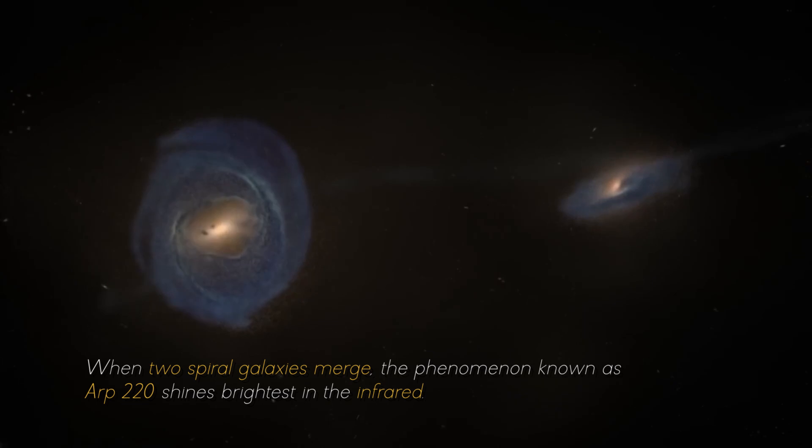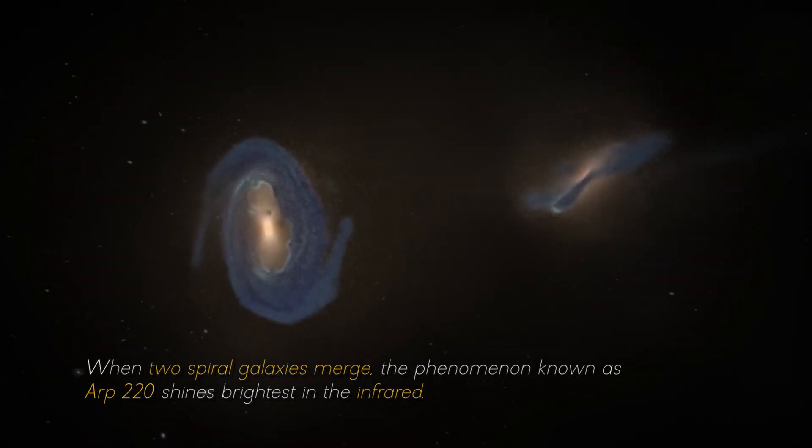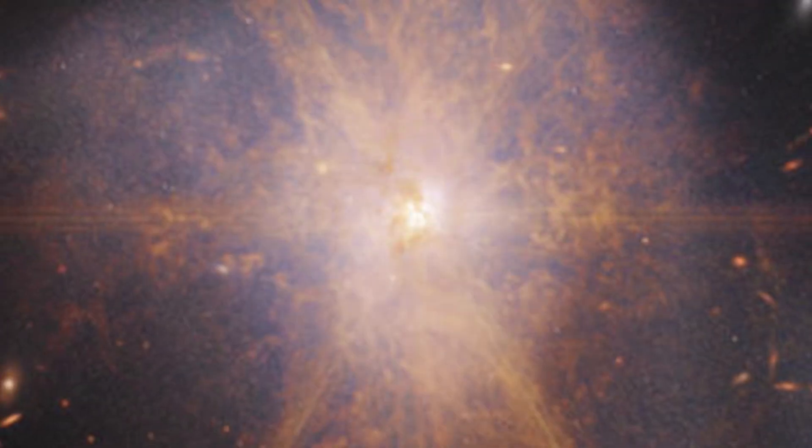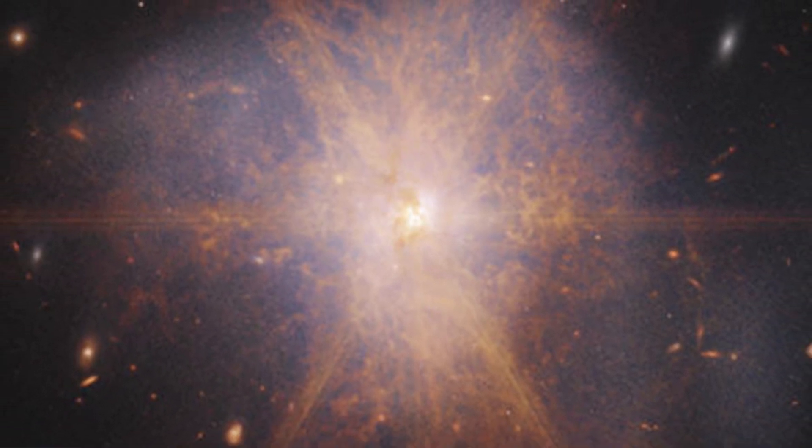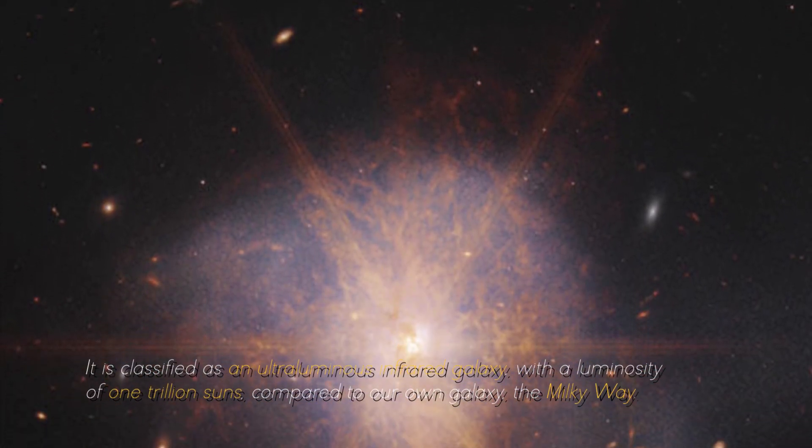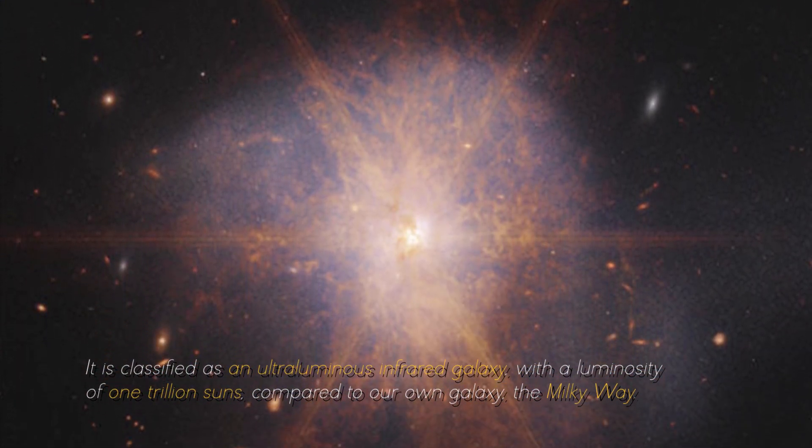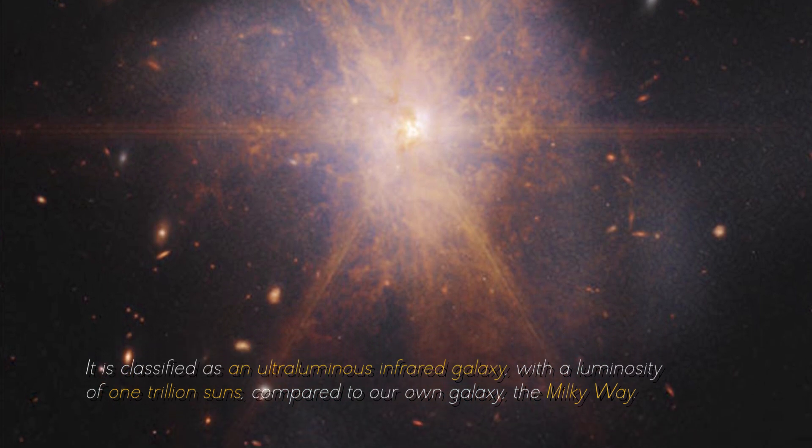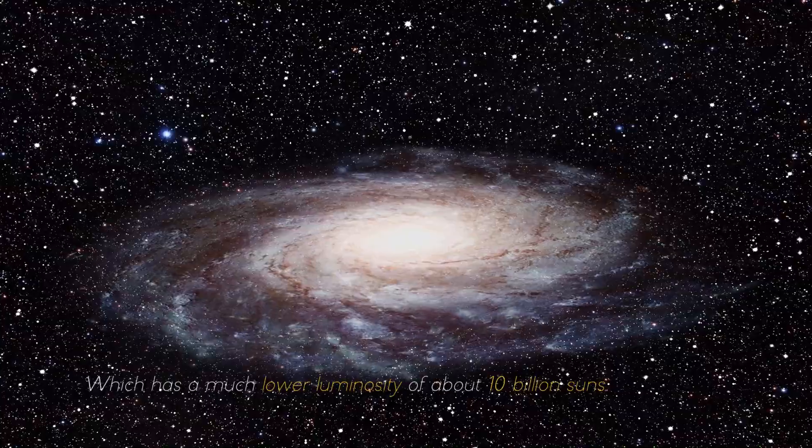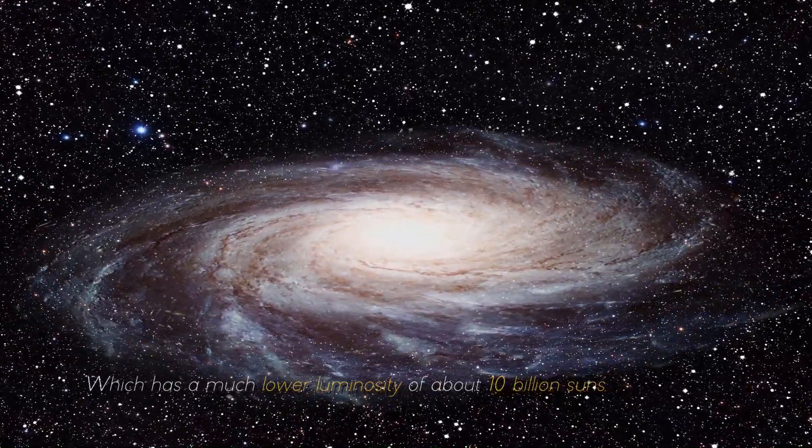When two spiral galaxies emerge, the phenomenon known as ARP 220 shines the brightest in the infrared, making it perfect for observation by the James Webb Space Telescope. It is classified as an ultra-luminous infrared galaxy, with a luminosity of 1 trillion suns compared to our own galaxy, the Milky Way, which has a much lower luminosity of about 10 billion suns.